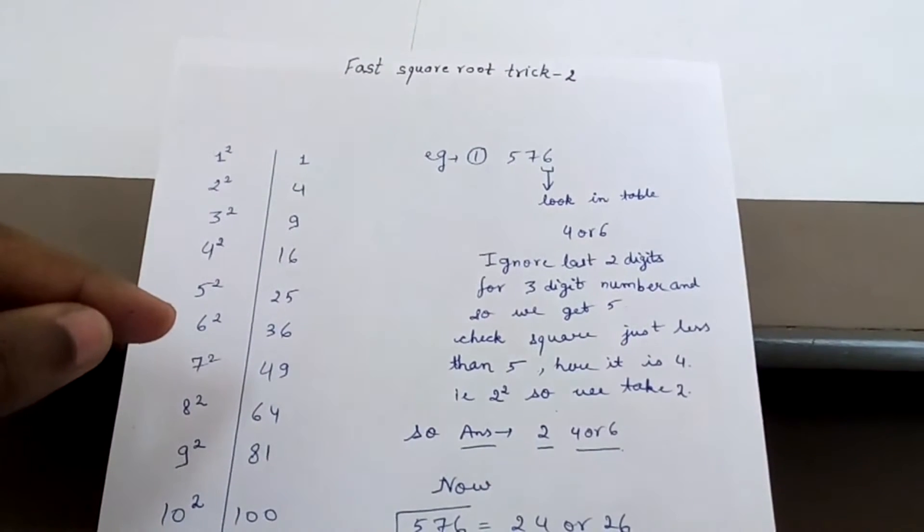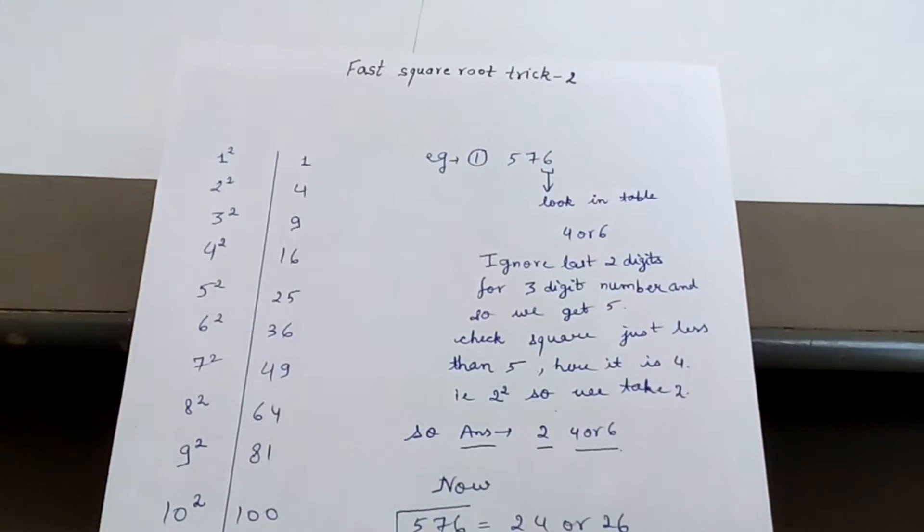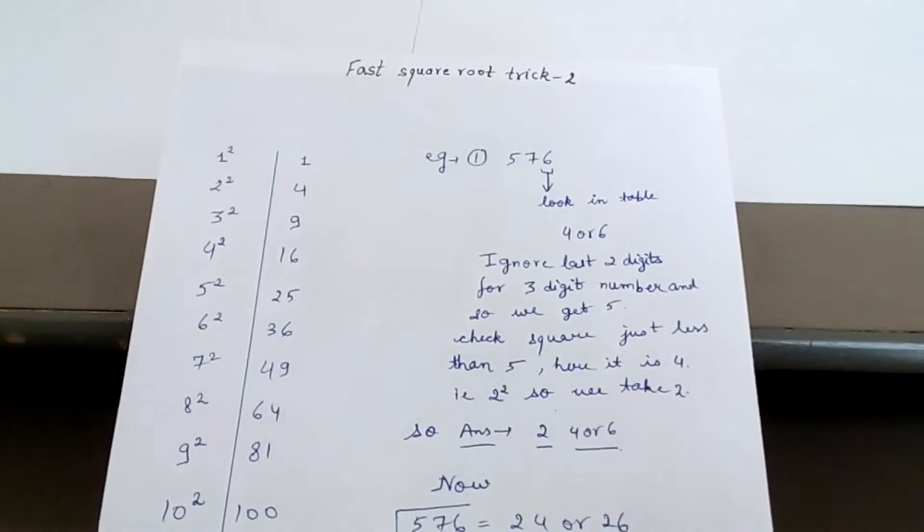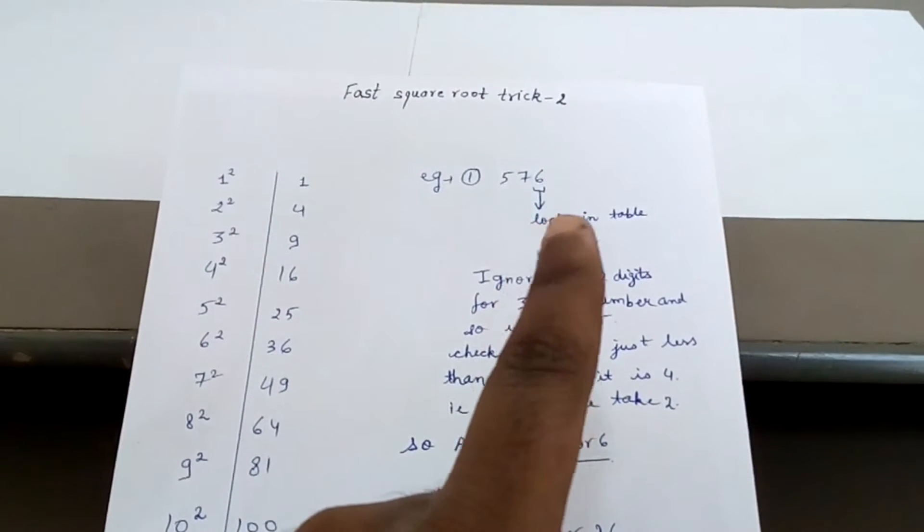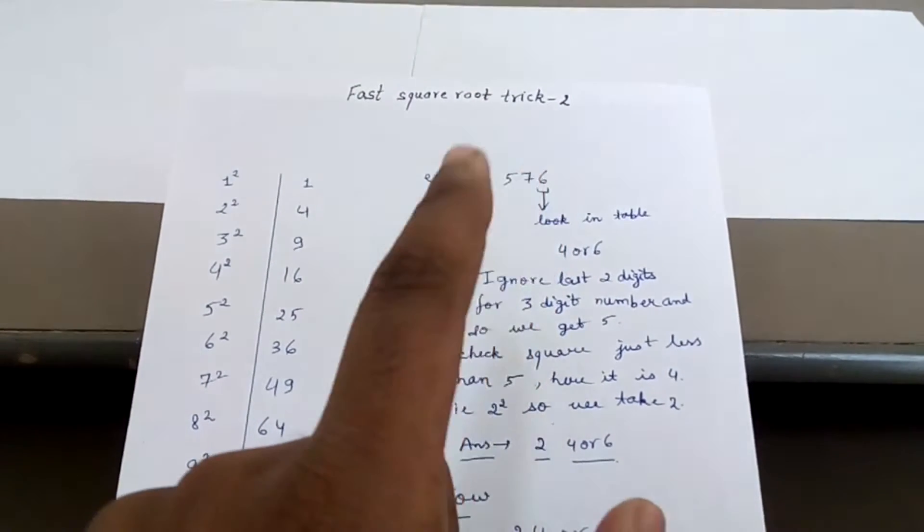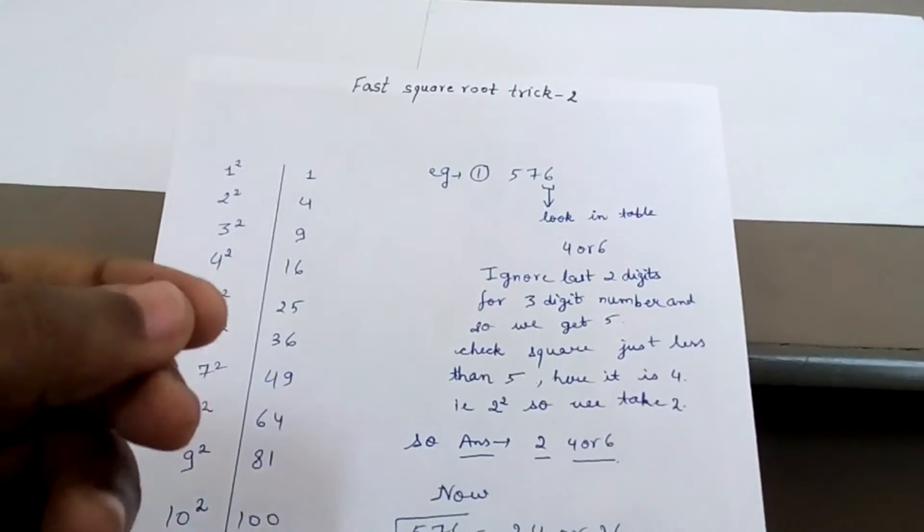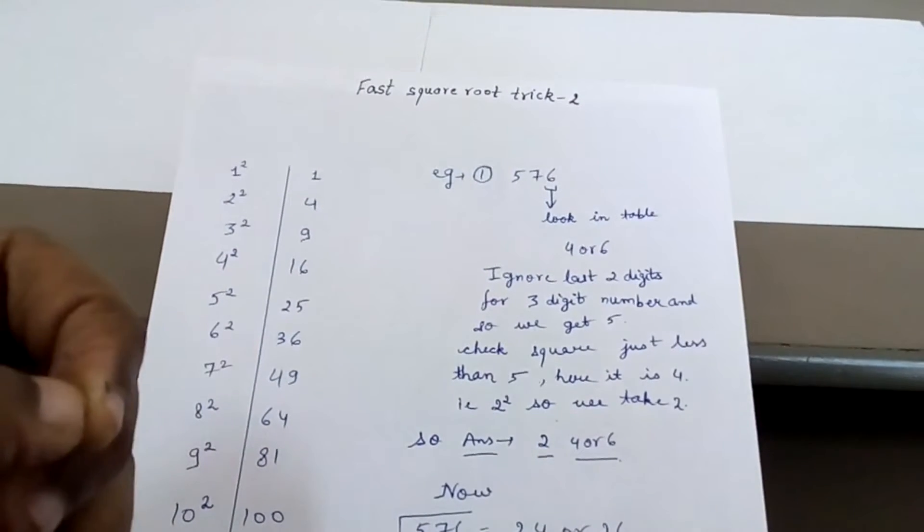So the unit digit of the square root will be 4 or 6. So you keep the unit digit aside, 4 or 6. Now ignoring the last two digits, that is 76, what is left is 5.